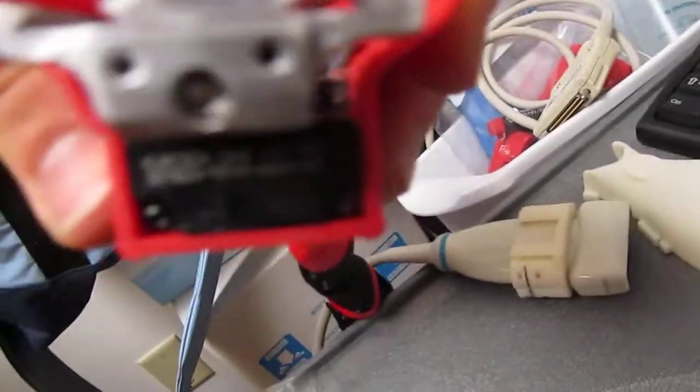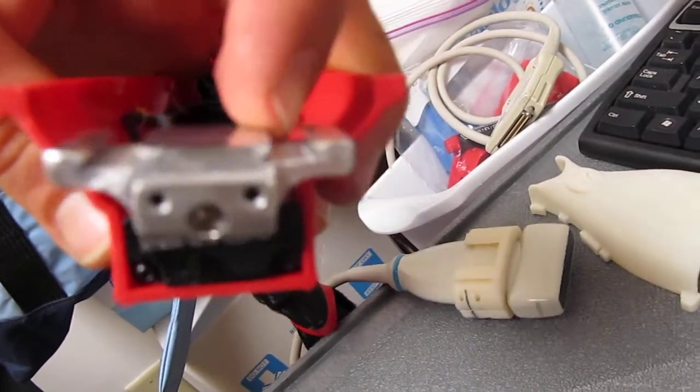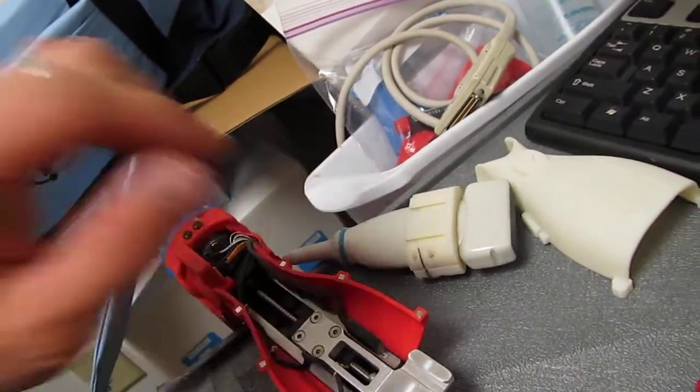This piece has a feature called a dovetail. You can see that it's tapered right here, and that matches up with these two grooves on the ultrasound probe itself.